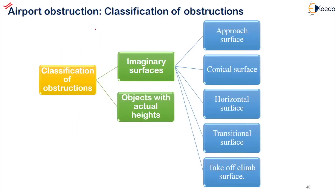Airport obstruction is classified into two divisions. The first one is the imaginary surfaces and the second one is the objects with actual heights. In imaginary surfaces, you have different categories: approach surface, conical surface, horizontal surface, transitional surface, and the fifth one is the takeoff climb surface.